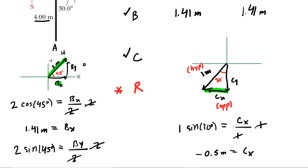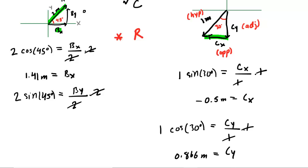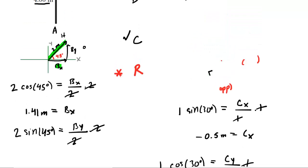For the Y component of vector C, CY is adjacent to the 30-degree angle, and the hypotenuse is 1 meter, so we use cosine: cosine(30°) = CY / 1, giving CY = 0.866 meters. Looking back at the picture, the Y component is projecting downward, so it must also be negative: CY = −0.866 meters. Both the X and Y components of vector C are negative. We fill those into the table: X component = −0.5 meters, Y component = −0.866 meters.